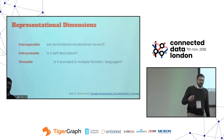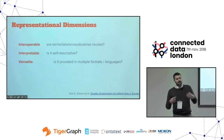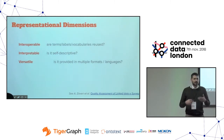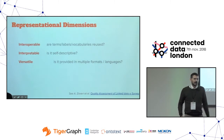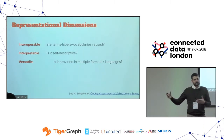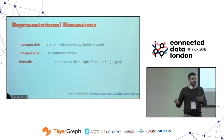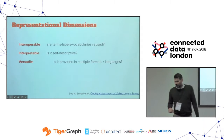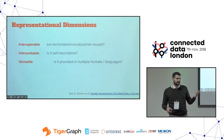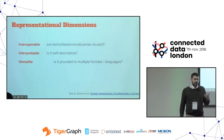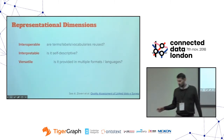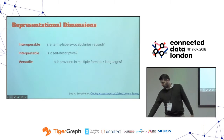Representational dimensions are about whether labels and everything you use are consistently reused across files. Otherwise you might have trouble mapping everything to the same vocabulary. Is the data self-descriptive? Can you access the metadata automatically? And can you provide the data in multiple formats or languages, which is also an indication of quality.